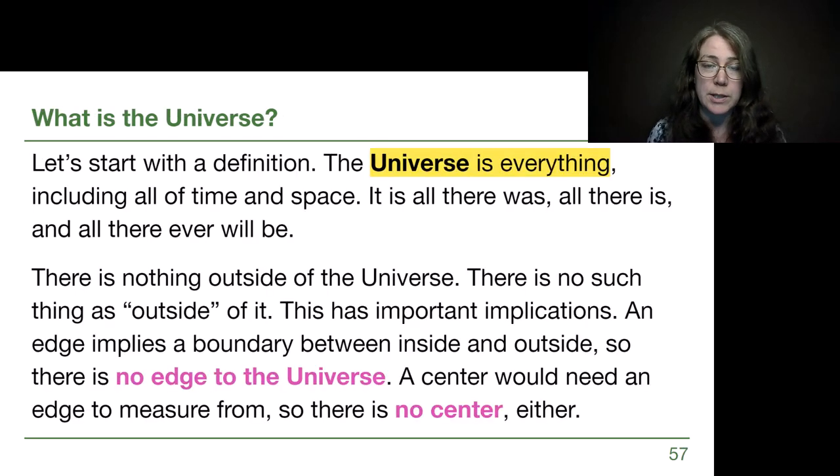So let's start with a definition, and this is the definition that we're going to be building our whole understanding of. The universe has to be, by definition, everything. All of time and space. Everything there ever was, everything there currently is, and everything that ever will be.